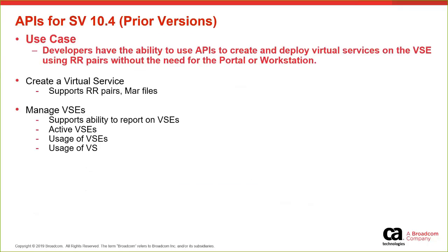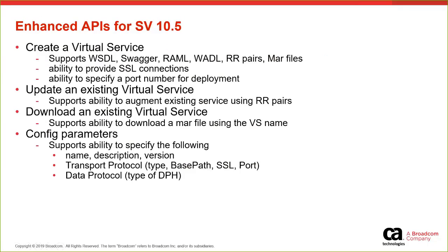The next topic is APIs. We've had APIs for the past eight to nine years. In version 10.4, we gave the ability to create and deploy a virtual service using RR pairs and MAR files, without going into the portal or workstation. You also had the ability to manage VSCs — reporting on a VSC, how long it has been running, how many transactions have been on the virtual service or virtual server environment, how many active VSCs, and the usage of virtual services and VSCs. What was missing was the ability to create virtual services from all industry well-known formats.